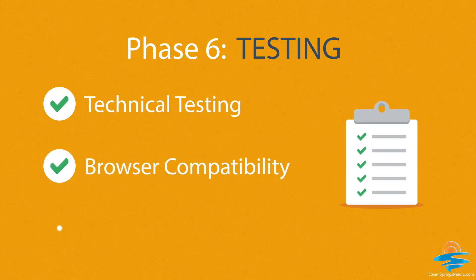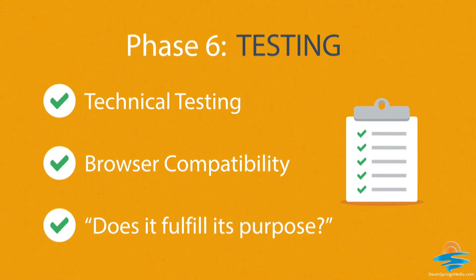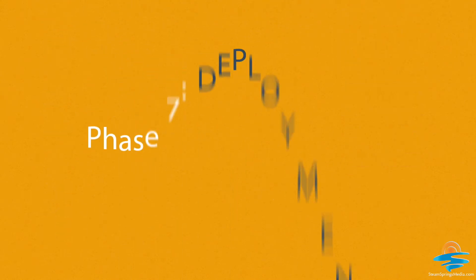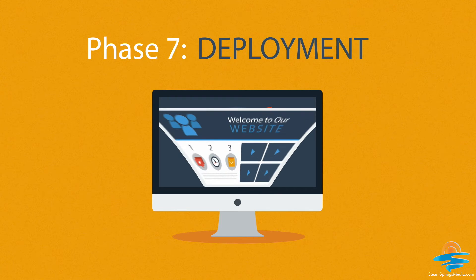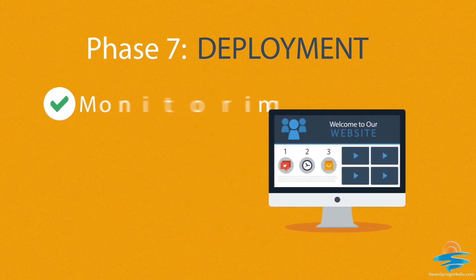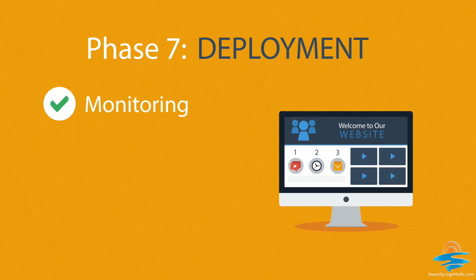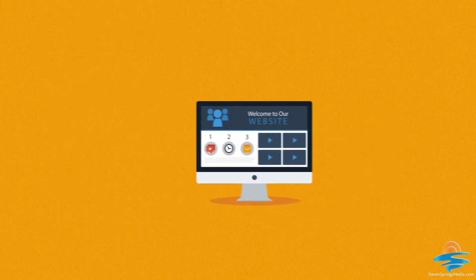Phase 7 — Deployment: after we launch the site, our job is definitely not done yet. We always monitor what's happening after the start, enabling us to fix any possible deficiencies. And if you want, we can also manage the future maintenance and updates for you.